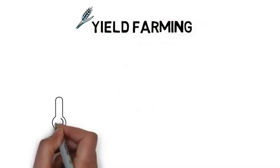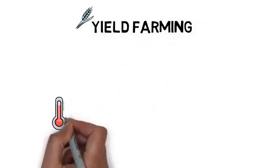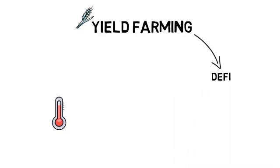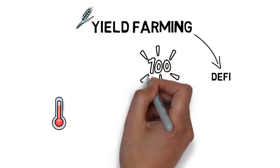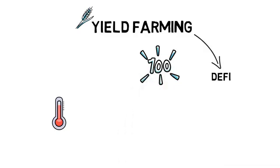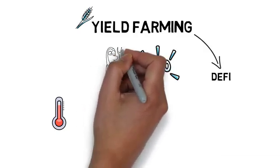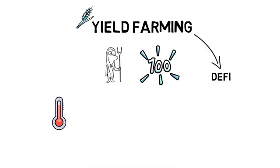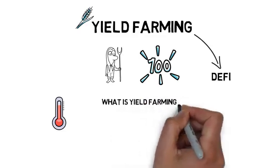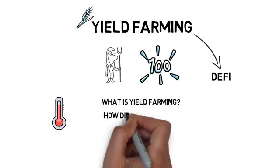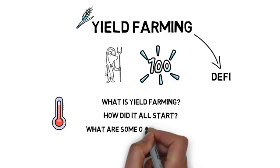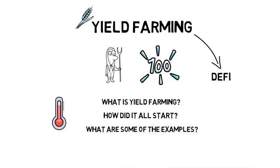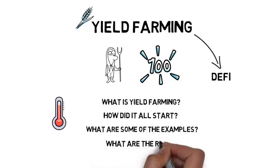Yield farming is one of the hottest topics in decentralized finance, and there is a high chance you may have already heard something about the insane returns that some yield farmers are making. So what is yield farming? How did it all start? What are some examples of yield farming? And what are the risks involved?